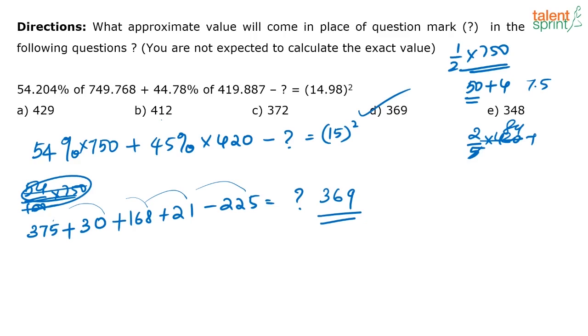This unit digit method, wherein we are looking at the units digit and checking what the answer will be, will generally not work in approximation. The digit root method, units digit method - you cannot use in questions on approximations because anyway we are taking the approximate answers.